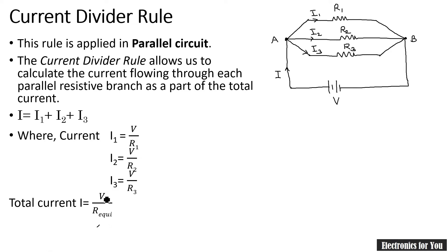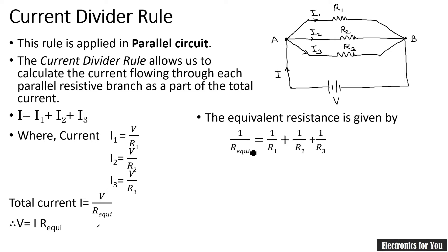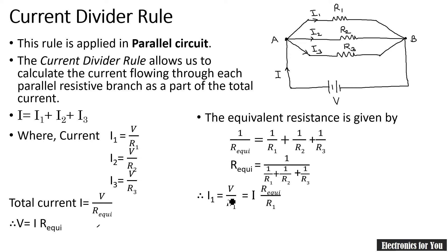Therefore V is equal to I times R-equivalent. If you substitute V equals I times R-equivalent, we get 1 upon R-equivalent equals 1 upon R1 plus 1 upon R2 plus 1 upon R3. Therefore R-equivalent equals 1 over that sum. Putting these values together, I1 equals V upon R1, which equals I times R-equivalent over R1.